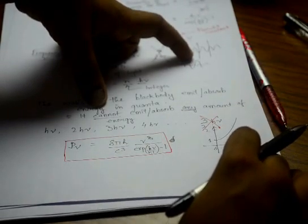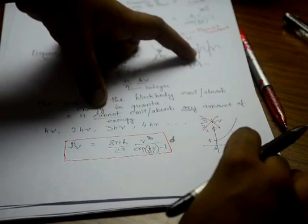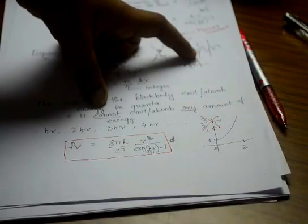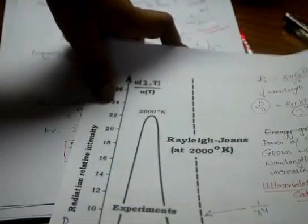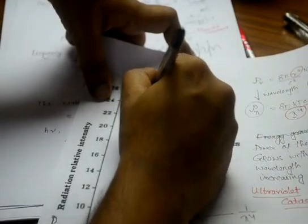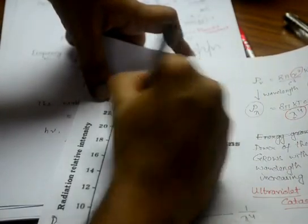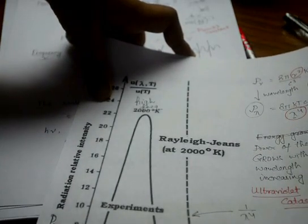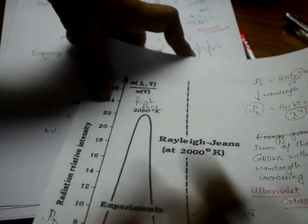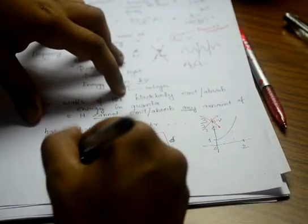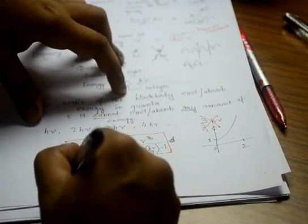But at high frequencies where Rayleigh-Jeans was having problems, remember Rayleigh-Jeans was this, so this was the high frequency, in that high frequency Rayleigh-Jeans was having problem explaining the black body spectrum. Now we see how Planck will do.